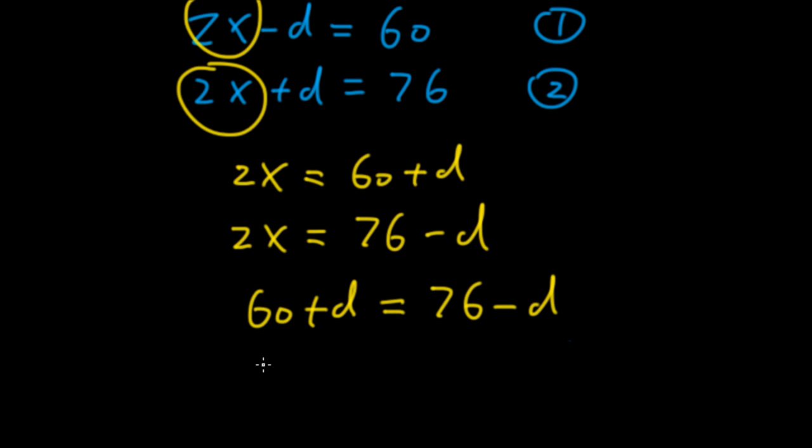So we have 60 plus D equals 76 minus D. Add D on both sides. 60 plus 2D equals 76. Subtracting 60 on both sides. 2D equals 16. And D equals 8.